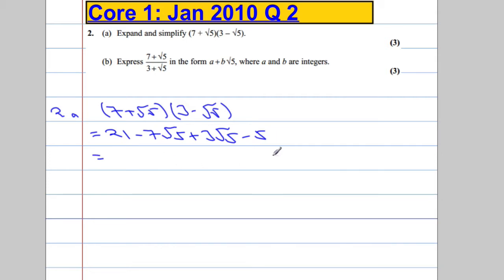Simplify, that means we're going to collect together our like terms. 21 take away 5 is 16. And negative 7 root 5 plus 3 root 5 is going to give us minus 4 root 5. So, part A, handy enough.